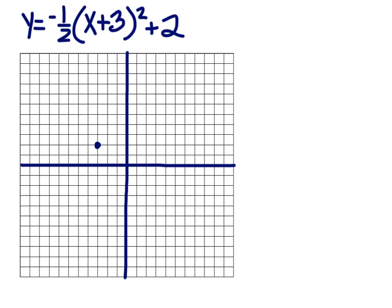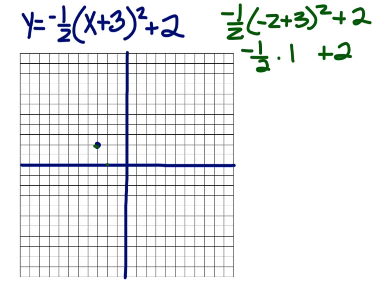And really, it's not as complicated as it sounds because you know where the middle is. So pick the next x. Pick x's negative 2 and plug it in. Negative 1 half times negative 2 plus 3, all squared plus 2. So we have negative 1 half times negative 2 plus 3 is 1, squared is 1, plus 2. Negative 1 half plus 2 is 1 and a half. So we have a point there. And we know it's going to mirror across. So I've got that same point there at negative 4, 1.5.